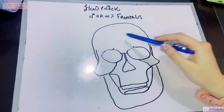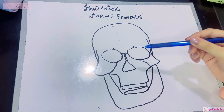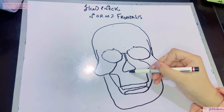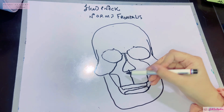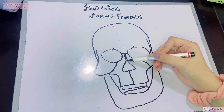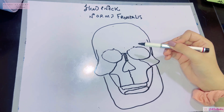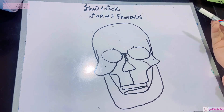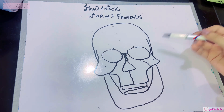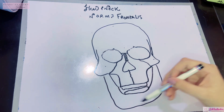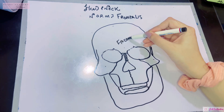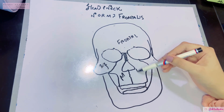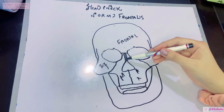The orbits are the two eyeball sockets where your eyes are placed. Then we have the two maxilla bones — a right and a left bone joined together by an intermaxillary suture. We also have the nasal bones at the bridge of the nose, the zygomatic bones forming the prominence of the cheek, and the mandible, which is the lower jaw.